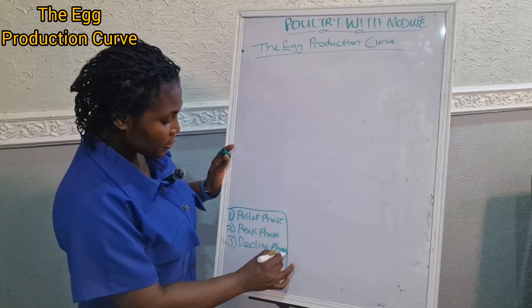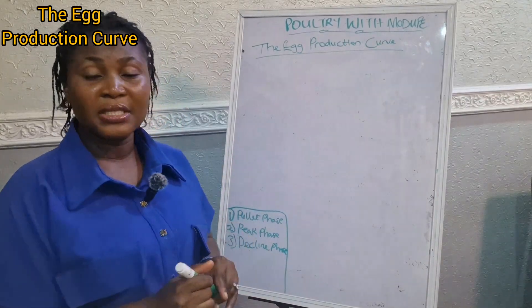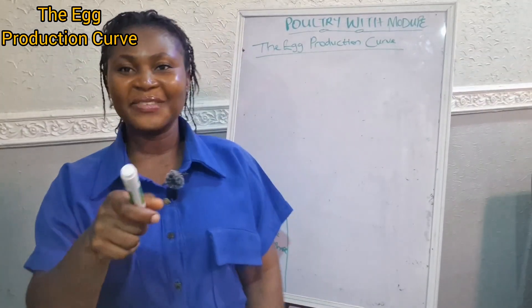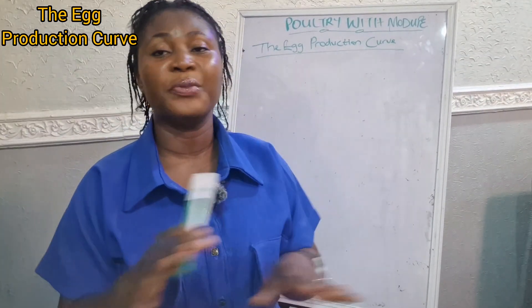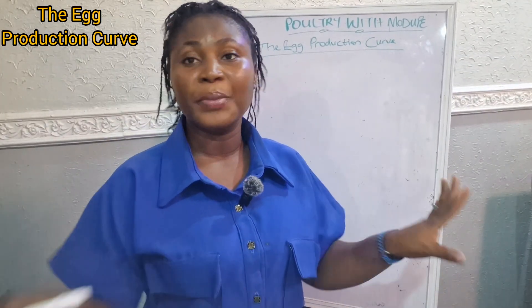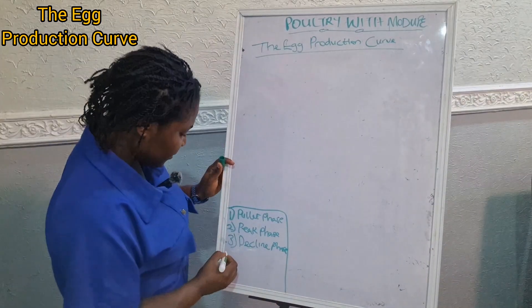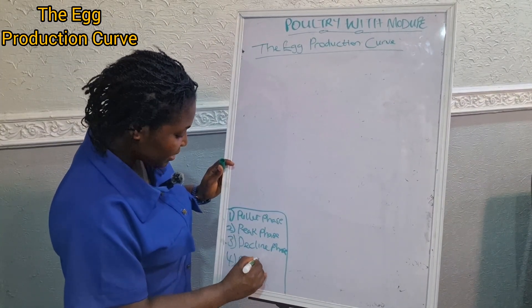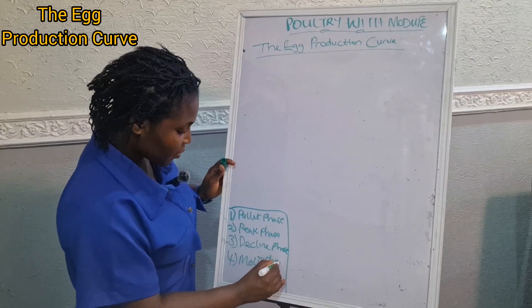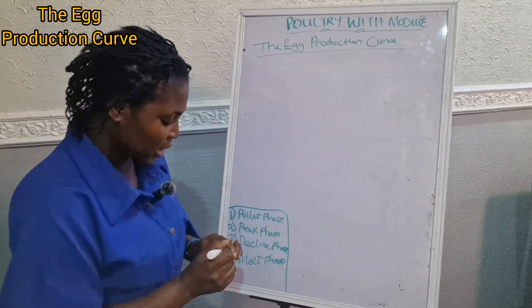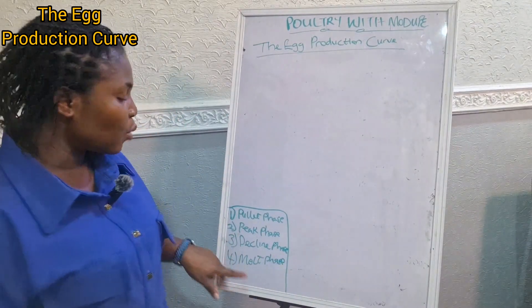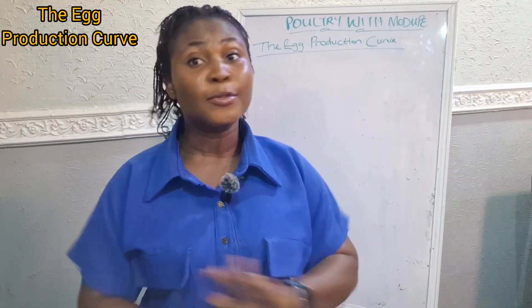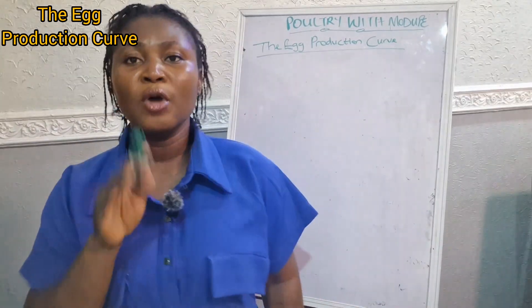We also have a last phase — the moult phase — where the birds altogether just stop laying eggs. I've actually never raised my birds to the moult phase, and we're probably going to talk about this eventually. The moult phase is where the birds just stop laying eggs altogether — no more eggs at that point.